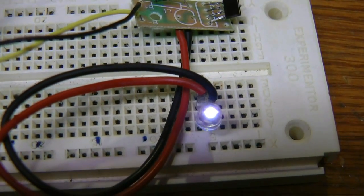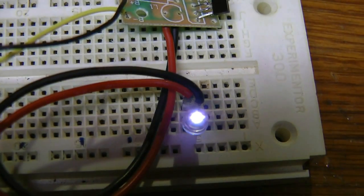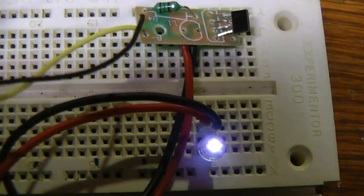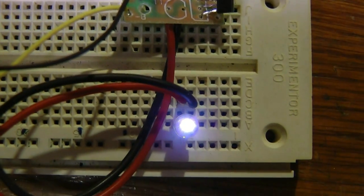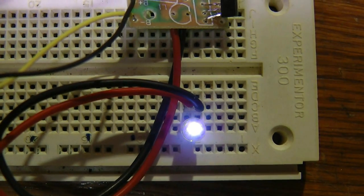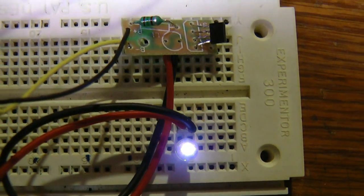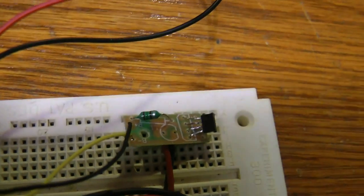Now this circuit board comes out of a lawn light, you know the kind that charge a battery during the day and then the light comes on at night. So you can see this lights up really nice.